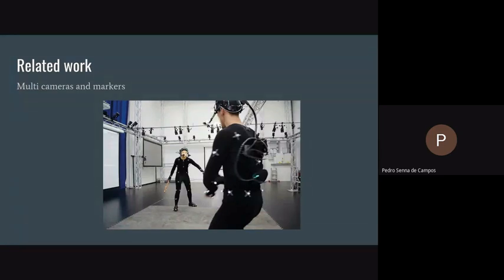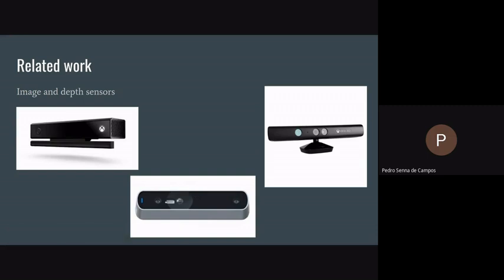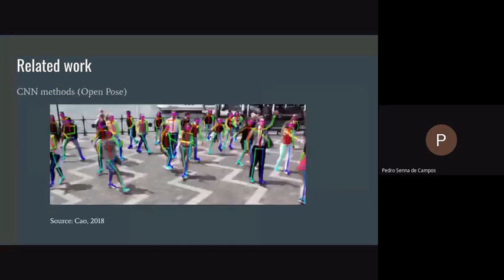But this solution is not suitable for clinical use. We are trying to explore other options. One option we are considering is using depth sensor devices. This is a device that combines depth sensors with image capture. This is a standard gaming device — the Kinect from Xbox — and the newer Kinect. This is also a Structure Core camera that uses the same technology. They capture both image and depth. We are also looking at work that uses convolutional neural networks.